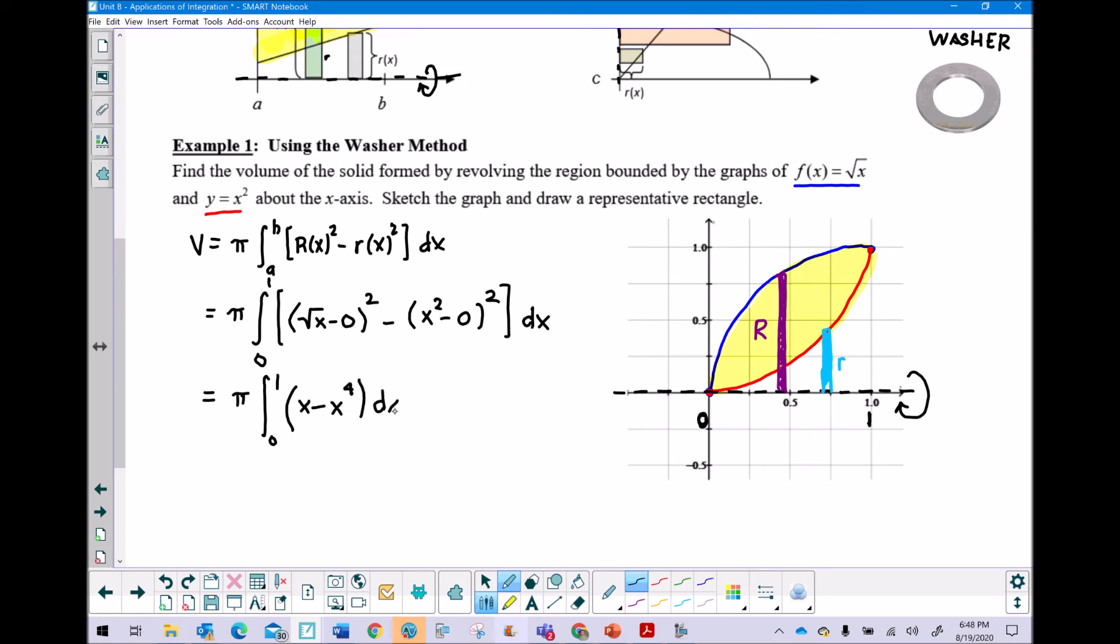And we have pretty easy time now on our hands. We'll go ahead and take this anti-derivative. We get x squared over two minus x to the fifth over five with the boundaries one to zero.